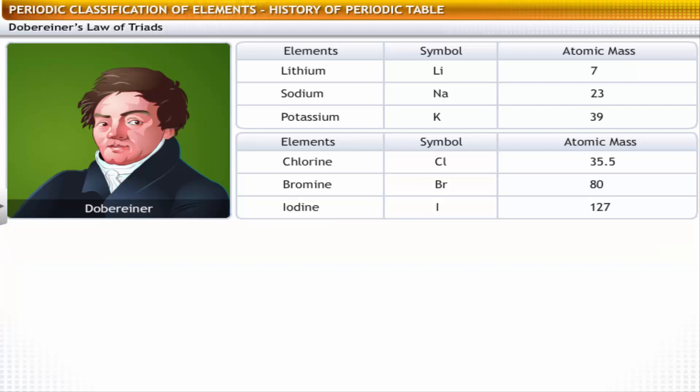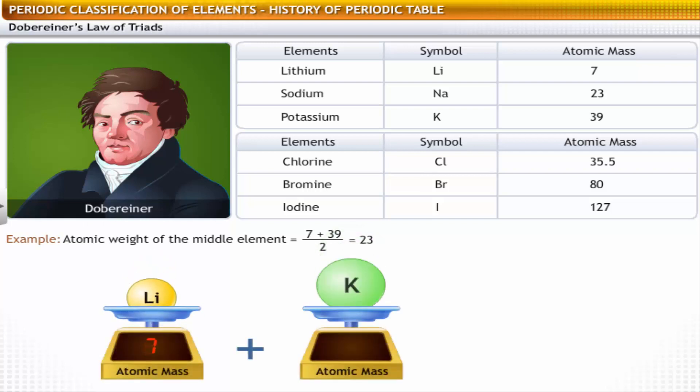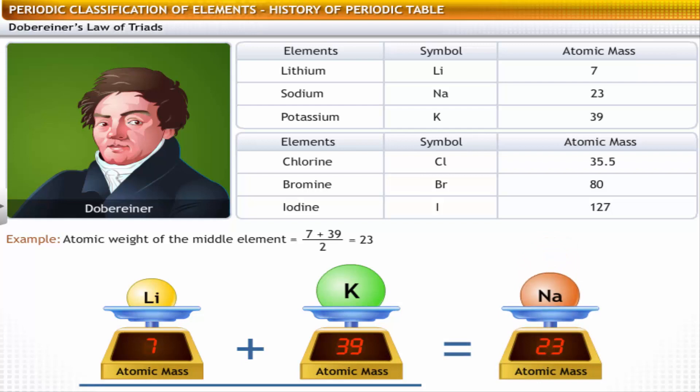To illustrate this law, consider the triad of lithium, sodium and potassium. The atomic mass of lithium is 7. The atomic mass of sodium is 23. And the atomic mass of potassium is 39. The arithmetic mean of the atomic masses of lithium and potassium is 23. This is equal to the atomic mass of sodium.